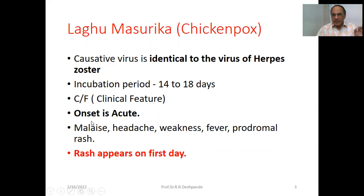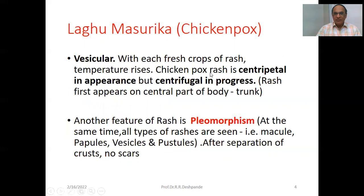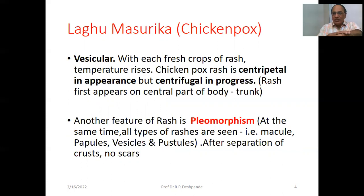Clinical features: onset is very acute. Malaise, severe headache, weakness, fever, and prodromal rash. Remember, rash appears on the first day itself. This is the difference between chicken pox and measles — both give rash but chicken pox rash appears immediately on the first day. This is a vesicular rash. The different types of skin lesions are: macule — at the level of the skin; papule — slightly raised; vesicular — raised with fluid inside.